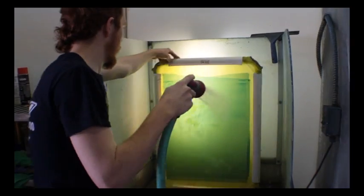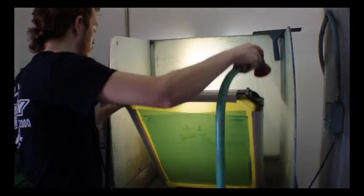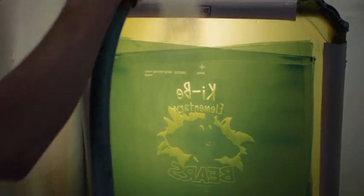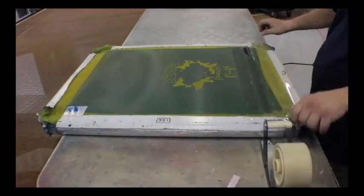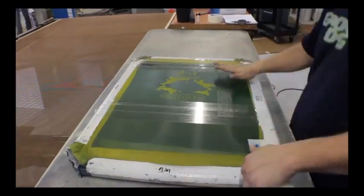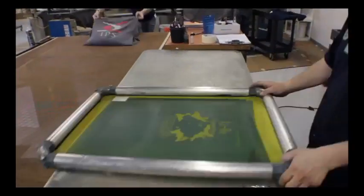As you can see, the image begins to appear in the screen as it is washed out. This will allow for the ink to pass through the screen. Tape is then applied along the edges of the screen to keep ink from leaking outside the screen area.